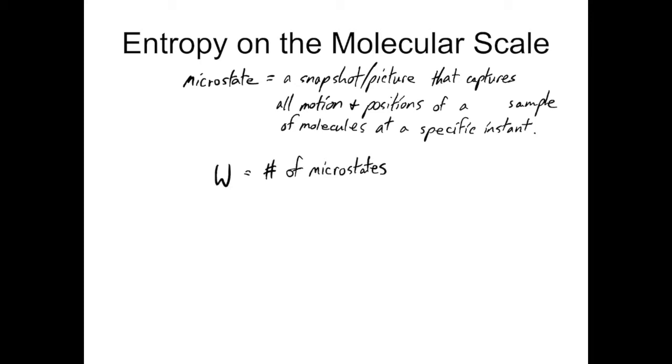Those number of microstates are given the value W. And there is an equation that uses the number of microstates to determine the entropy. So in this equation, S is the entropy, k is the Boltzmann constant, and W is again the number of microstates. So entropy ends up being a measure of effectively how many microstates are associated with any particular sample. And remember also that entropy is a state function, so that the change in its final to initial conditions gives you the change in entropy.